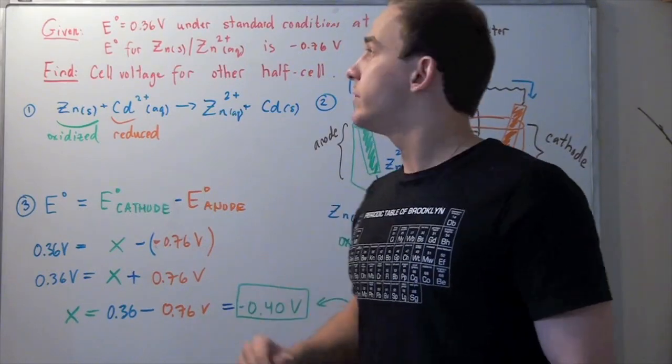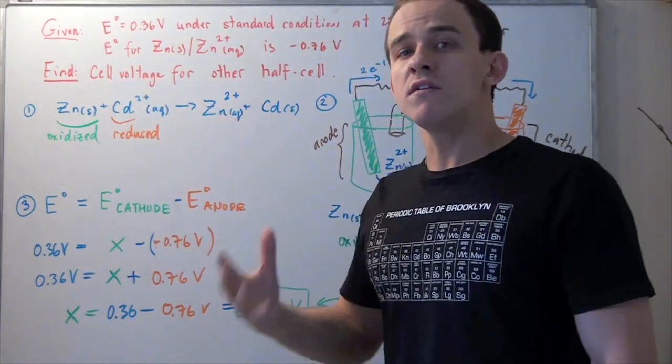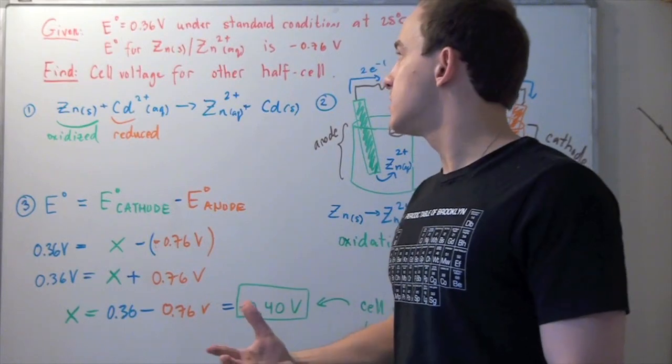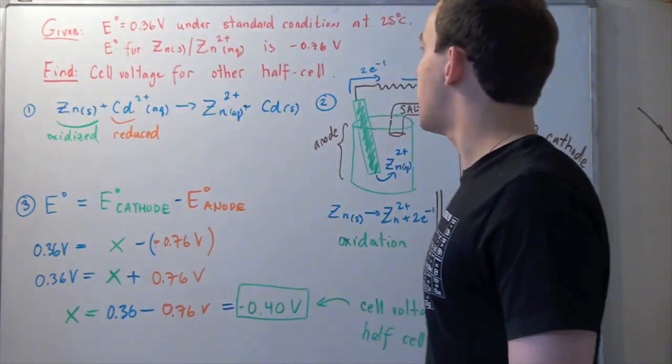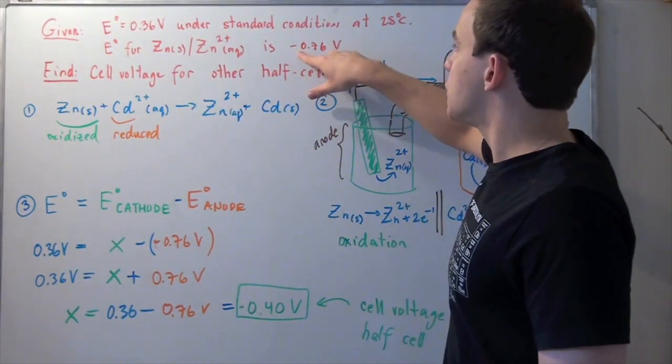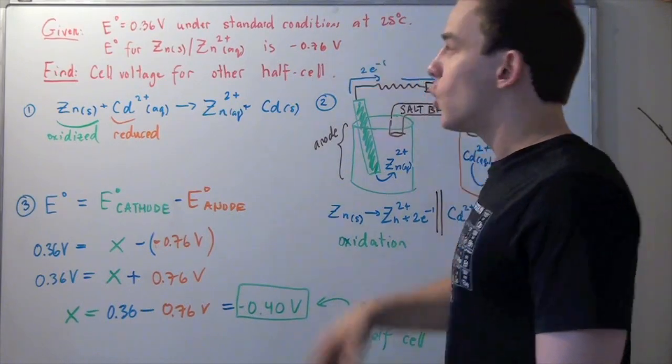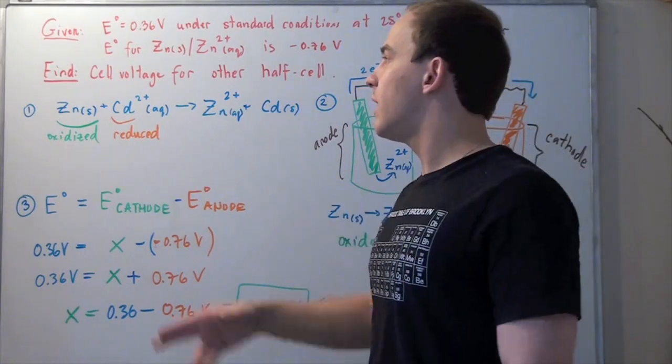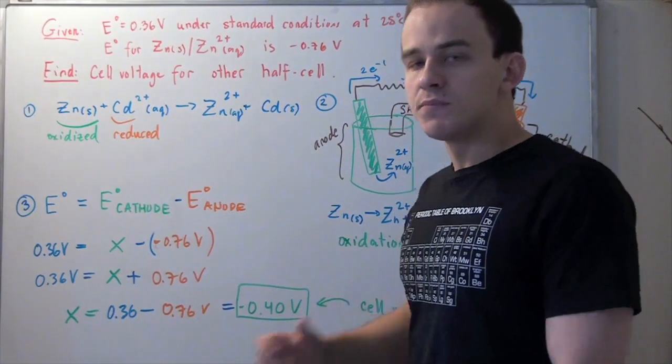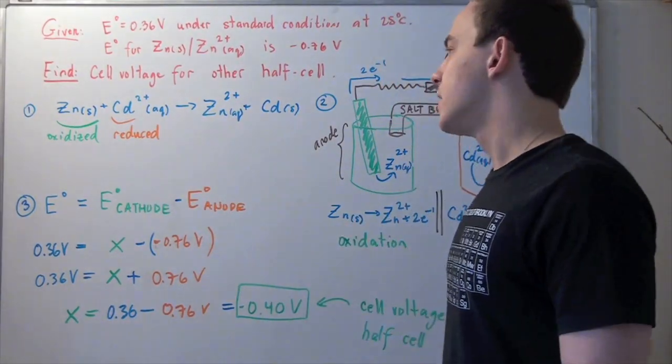We are also given the cell voltage for one of the two half-cells. The zinc half-reaction is given as negative 0.76 volts. Our goal is to find the cell voltage for the other half-cell, for the other half-reaction.